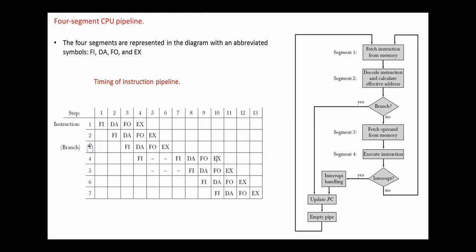Assume that instruction three is a branch instruction. As soon as this instruction is decoded in DA in step four, the transfer from FI to DA of other instructions is halted until the branch instruction is executed in step six. If the branch is taken, a new instruction is fetched in step seven. If not, the instructions fetched previously in step four can be used.